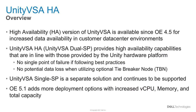Unity VSA, also known as Unity VSA Dual SP, is a high availability version of the Unity VSA that was introduced in the OE 4.5 update. Unity VSA Dual SP provides greater data availability in customer data center environments that require a software-defined storage solution. Dual SP accomplishes redundancy benefits that are in line with that of the Unity hardware platform. With Dual SP, we can ensure no single point of failure as long as best practices are followed.